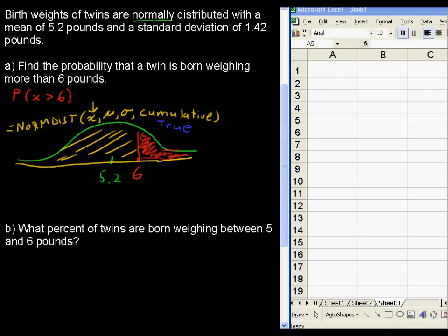So, using the idea of the complement, and the total area under the curve is 1, the way we're going to find this area to the right of 6, if Excel will give us the area to the left, then to find the area to the right, we're just going to have to say 1 minus what Excel gives us, so 1 minus the normdist.